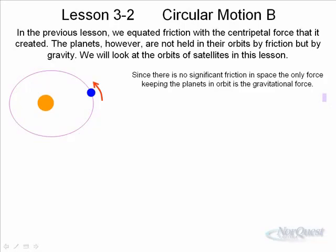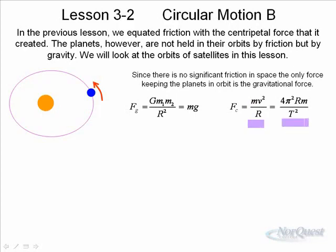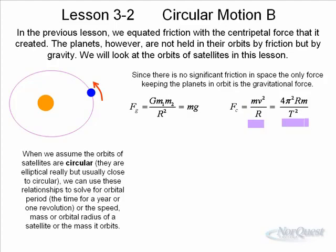The gravitational force is given by Fg = Gm1m2/R², or sometimes, if you're close to a planet and you know what g is, then you could say that it's just equal to mg. And centripetal force is equal to mv²/R, or 4π²Rm/T².